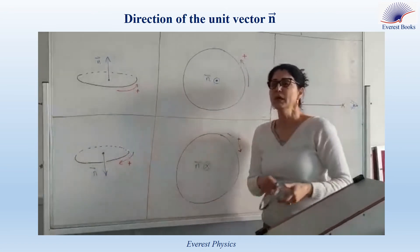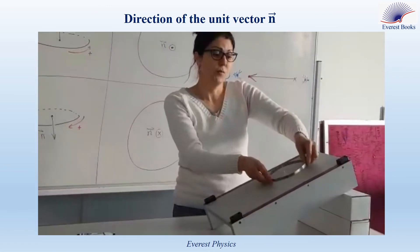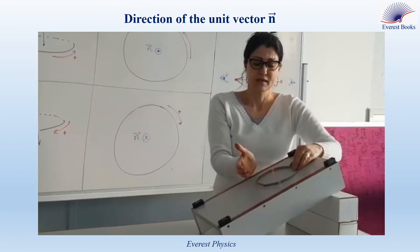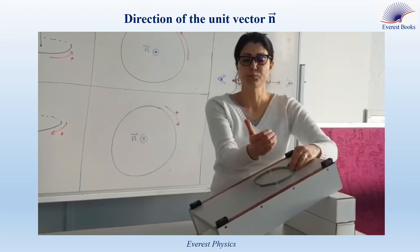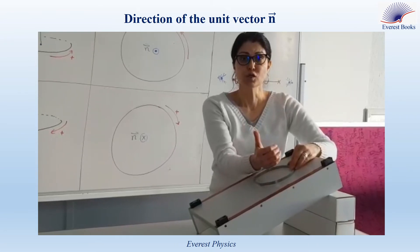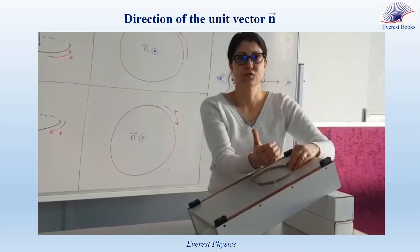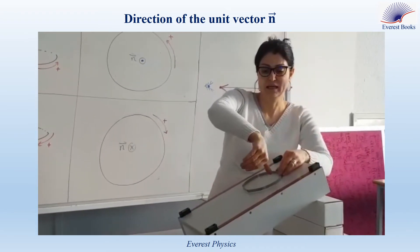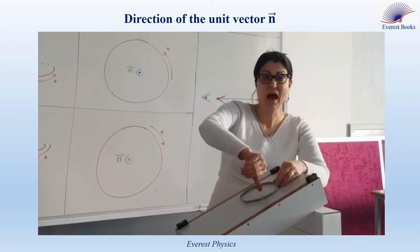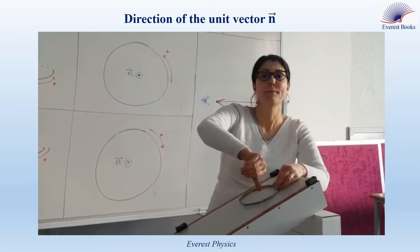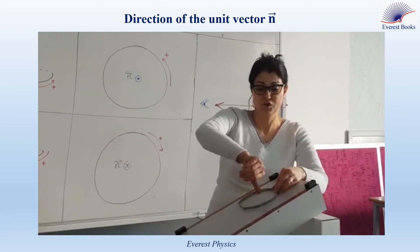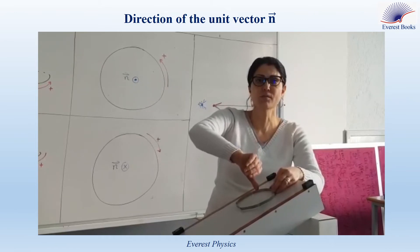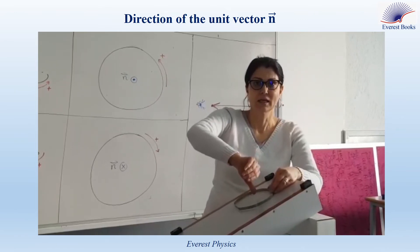We can also place the loop on an inclined plane and follow the same procedure. If the positive sense is in one direction, the thumb points upward perpendicular to the surface of the inclined plane. If the positive sense is reversed, the thumb points downward, meaning the unit vector N is directed downward, perpendicular or normal to the inclined plane.